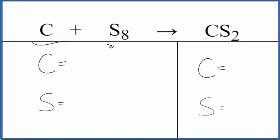Let's balance the equation for C plus S8 gives us CS2. We have carbon and then octosulfur and this is carbon disulfide.